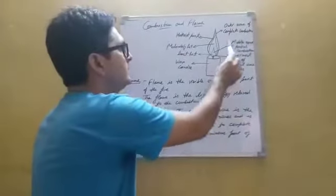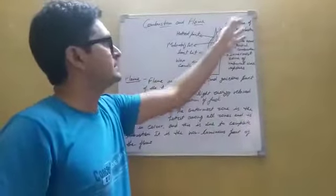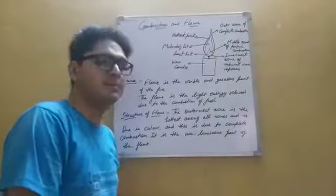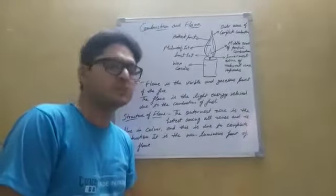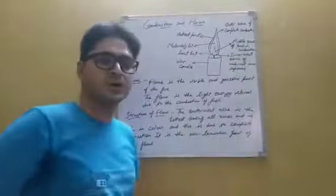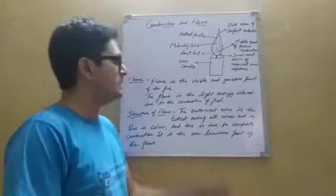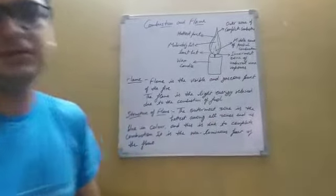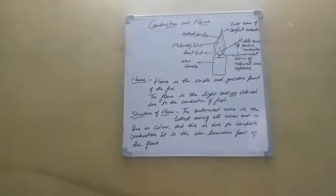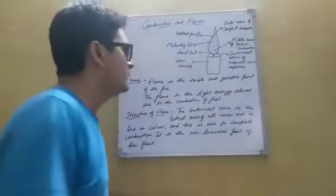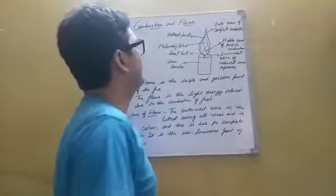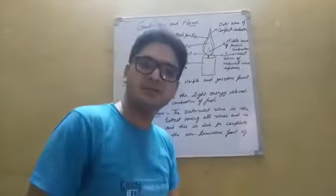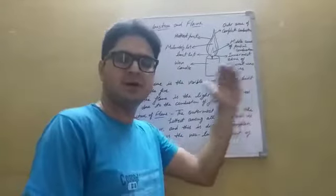After that is the middle zone, and the last is the outer zone of complete combustion. You can see the diagram that needs to be drawn. This is showing the candle flame and its different parts.